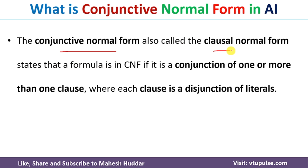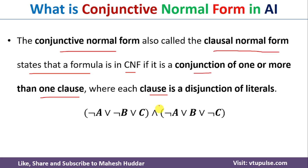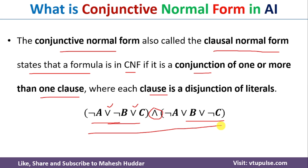Conjunctive normal form is also known as clausal normal form. It states that a particular formula is in CNF if it is a conjunction of one or more clauses, where each clause is a disjunction of literals. In this particular formula, we have a conjunction of clauses — the first clause and the second clause. Each clause is a disjunction of literals: A, B, C are the literals here. The disjunction of literals is a clause, and the conjunction of clauses is the conjunctive normal form.